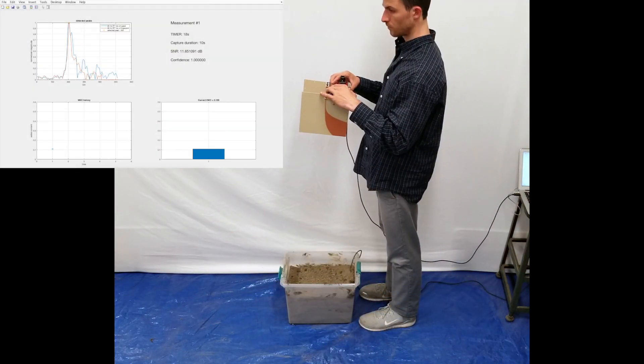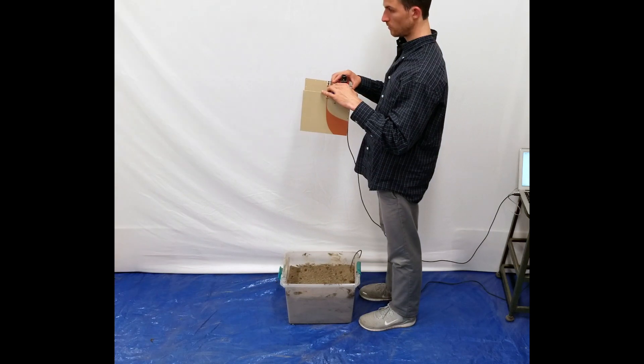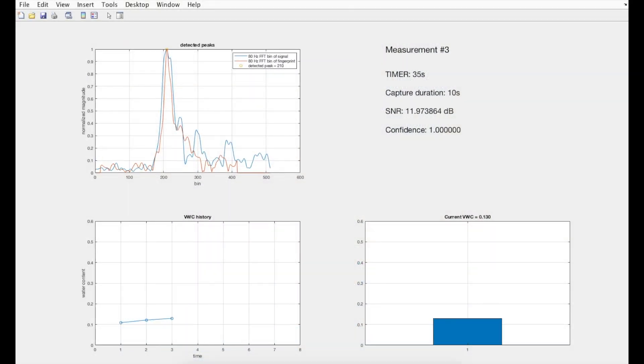To take a measurement, the user holds the radar reader over the tag. In this video, each measurement takes 10 seconds.